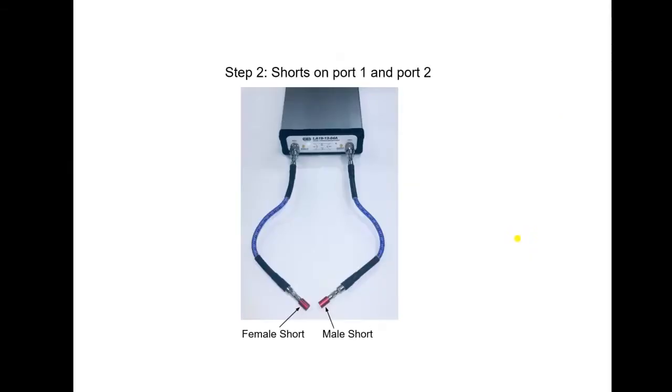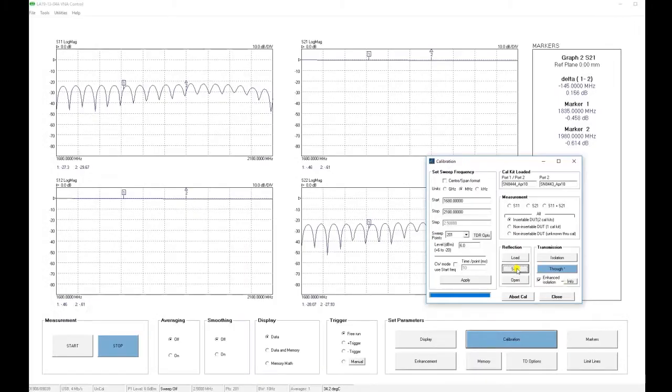The next step is to measure two shorts. We connect our shorts, and click to make the measurement. Now, the measurement is slow, because we are using a 10 Hz bandwidth, so I am going to stop the recording to shorten the video.